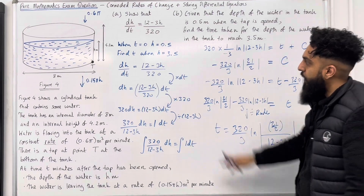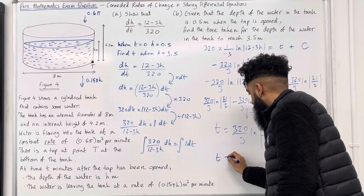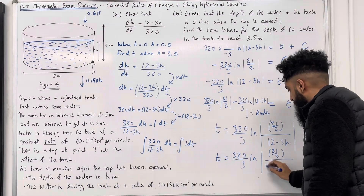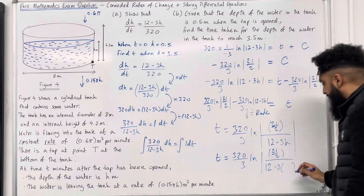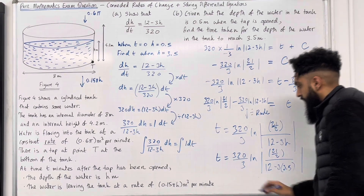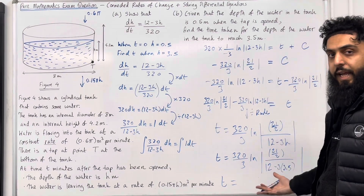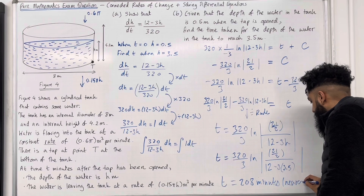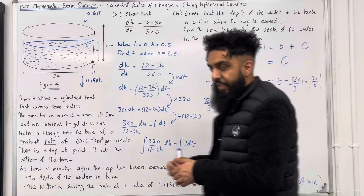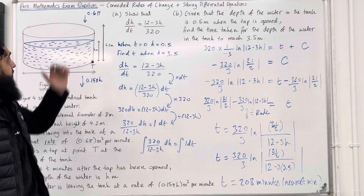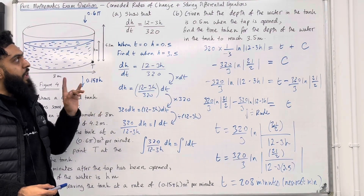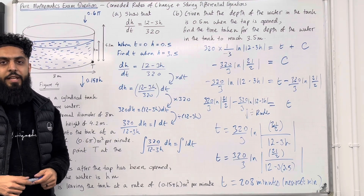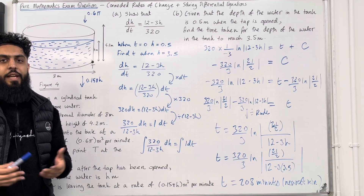Now I can calculate t when h = 3.5. Substituting h = 3.5 into the formula and evaluating gives t = 208 minutes to the nearest minute. That completes this exam question and this teaching video on Pure Mathematics — Connected Rates of Change and Solving Differential Equations. If you found this video useful, please subscribe, leave a like, leave a comment, and turn on your notification bell so you receive notifications every time I post a new teaching video. Thank you.